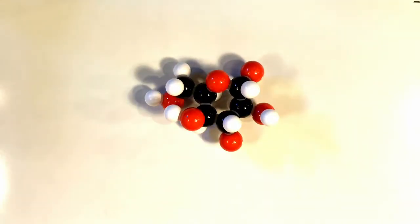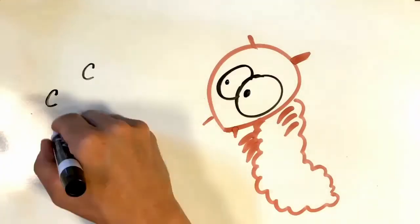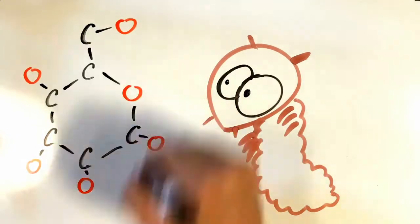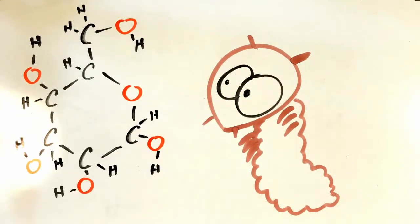Now, a sugar molecule looks like this. And we can draw out its structure using carbons, hydrogens, and oxygens to show where each atom goes. Notice the distinctive hexagon shape, with carbons making up most of the ring.